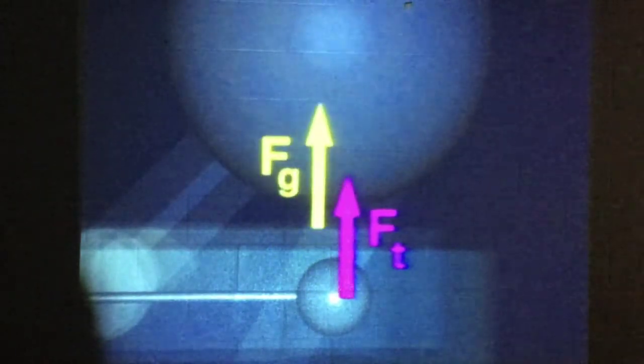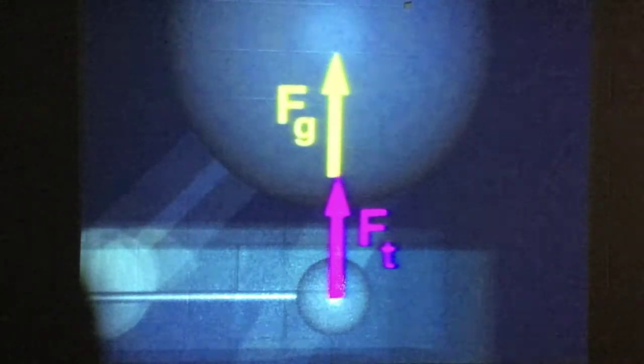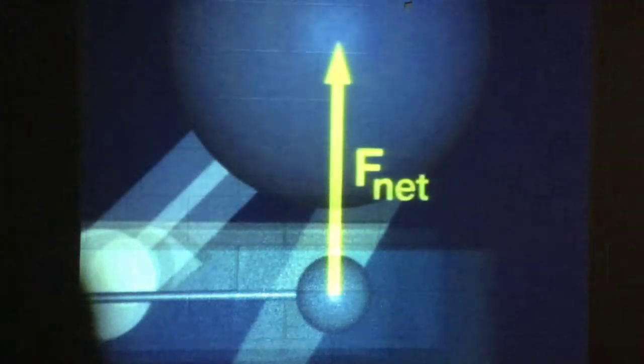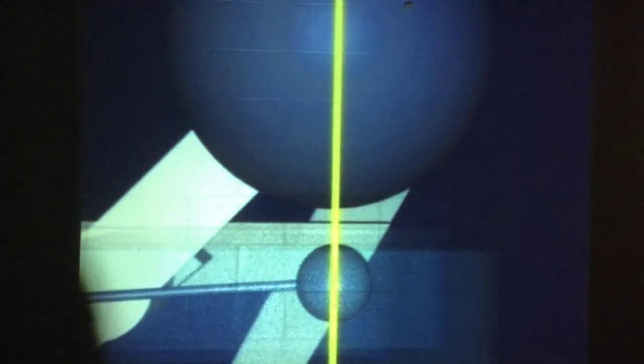Since these two forces are equal, the net force is two times the gravitational force and results in a uniform acceleration of the sphere. For small deflections, this acceleration is very nearly along a straight line.